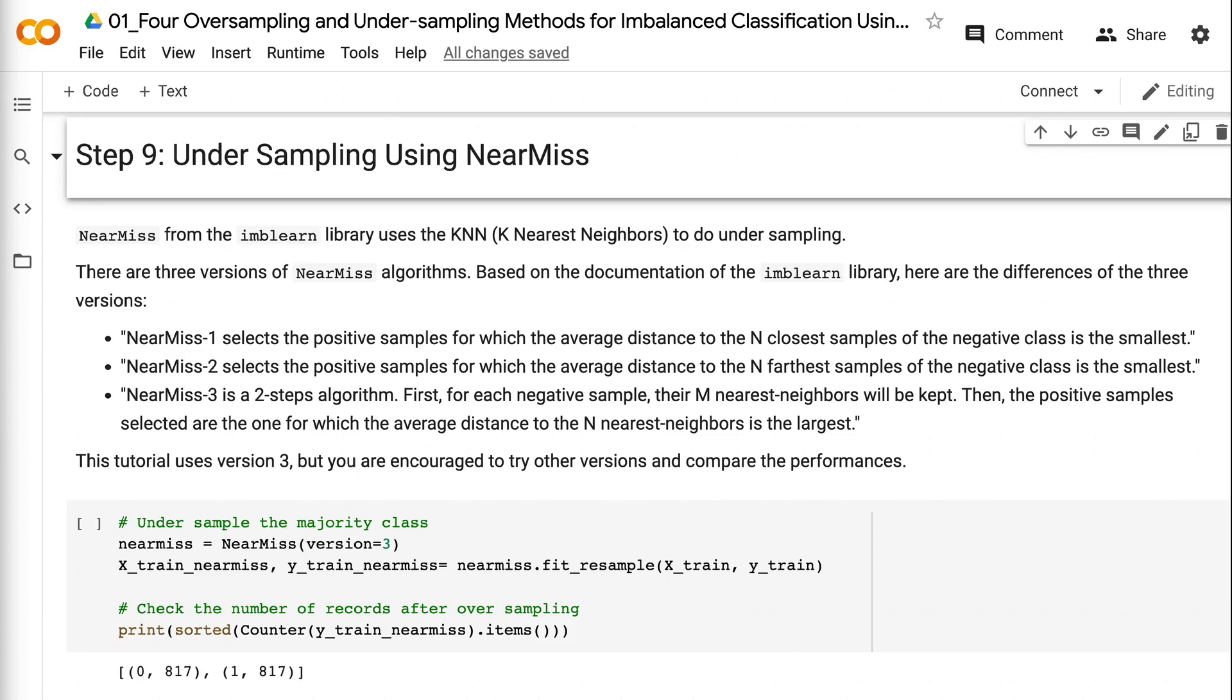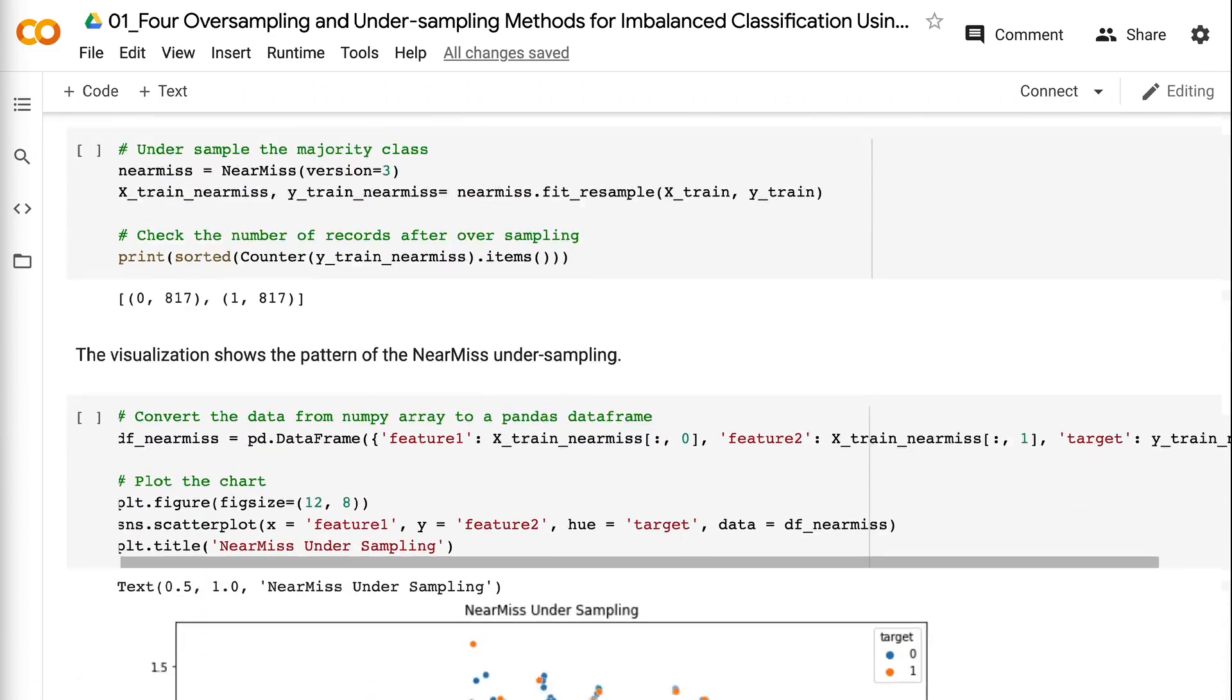First, for each data point in the minority class, k-nearest neighbors are sampled. Then, for each majority data point that is sampled, we calculate the average distance to the n-nearest neighbors. The data points with the largest average distance are sampled. The visualization shows the pattern of the near-miss undersampling.